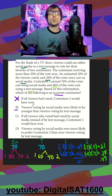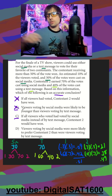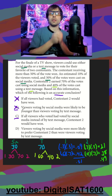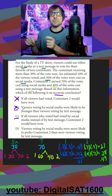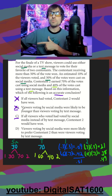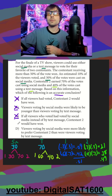For B, viewers voting by social media were more likely to be younger — didn't say anything about age. In C, if all viewers who voted had voted by social media instead of by text message, contestant 2 would have won. Well, that's not true, because if I voted for contestant 1 through text message, jumping onto social media doesn't mean I'm going to magically vote for contestant 2. My vote would most likely stay the same, so I don't think that's true either.